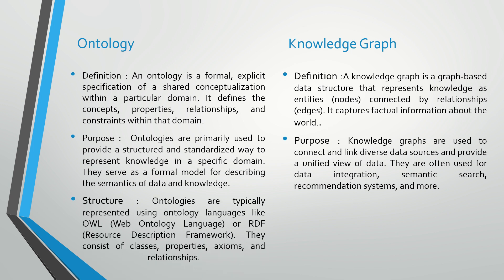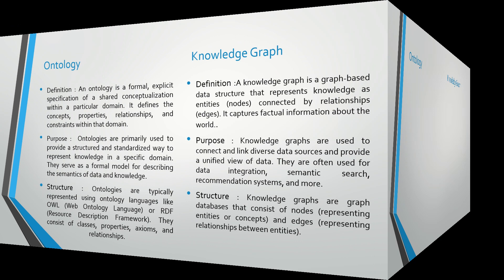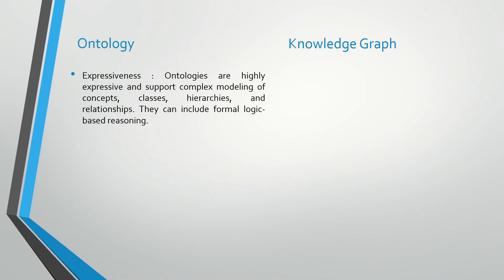Regarding structure, ontologies are typically represented using ontology languages like OWL (Web Ontology Language) or RDF (Resource Description Framework). They consist of classes, properties, axioms, and relationships. A knowledge graph is a graph database consisting of nodes representing entities or concepts and edges representing relationships between entities.